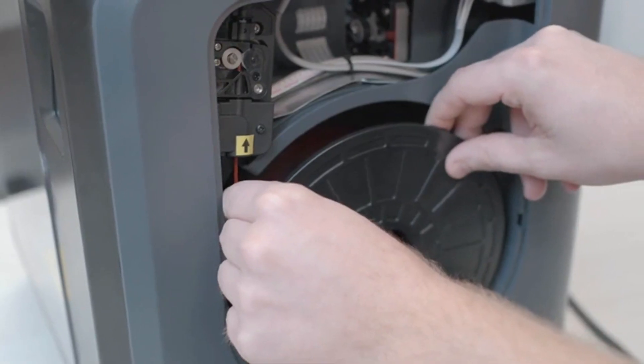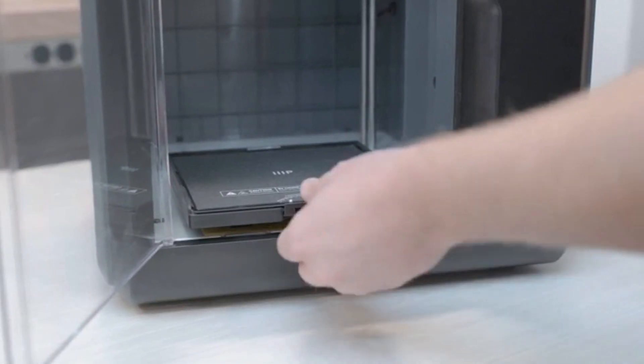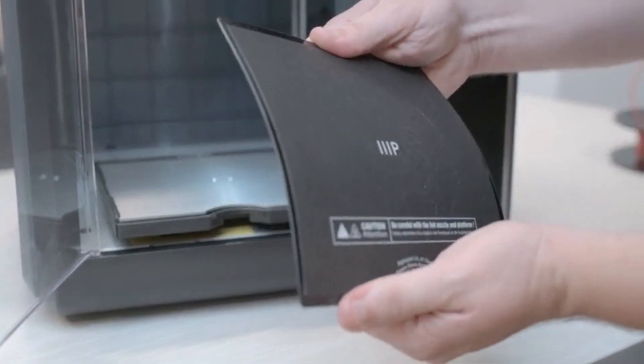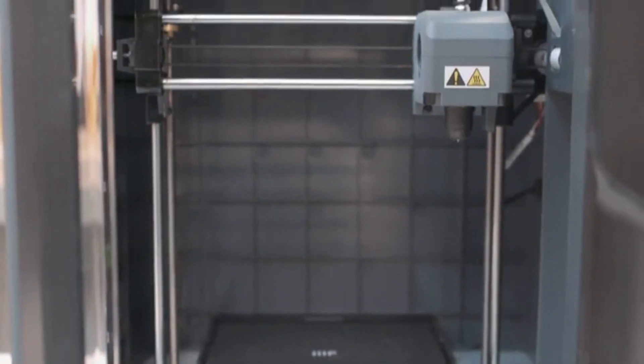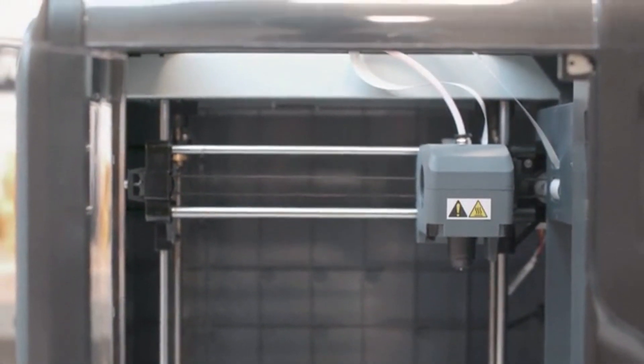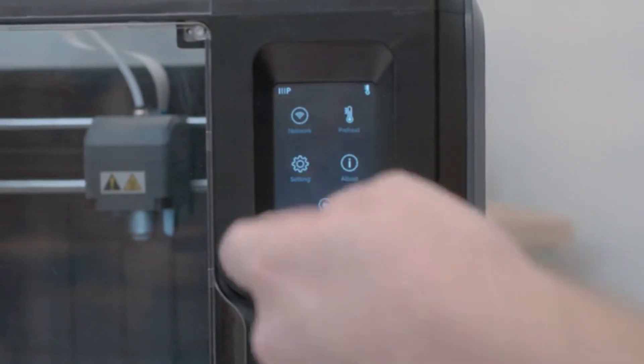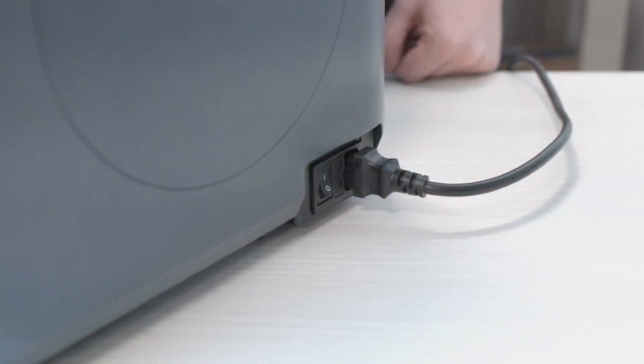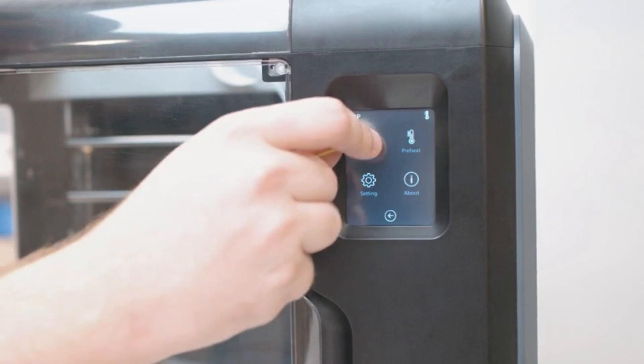The MP Voxel is speedy, producing prints in times we usually see from more expensive devices. We were also impressed with the quality of prints, which accurately recreated details and captured natural smooth curves in our testing. You may run into some minor frustrations with setup, but once it's up and running, the MP Voxel is the best 3D printer for people who want to experience 3D printing for the first time.